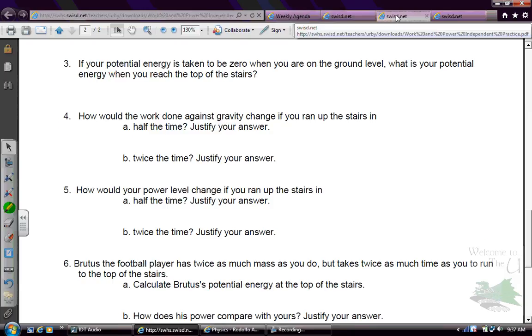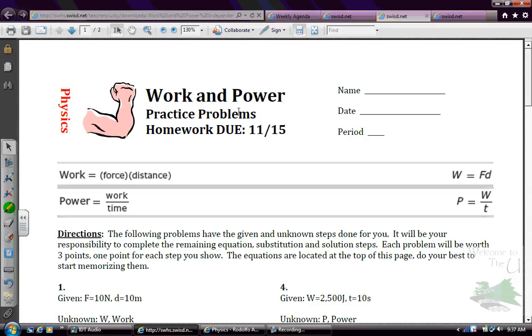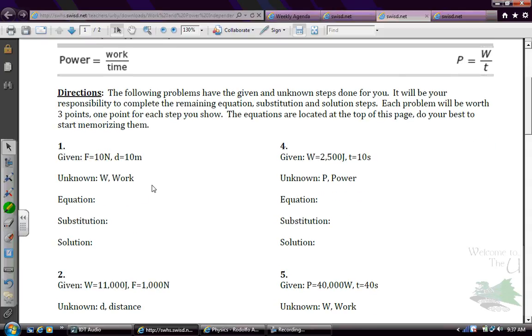So once we're done with this, if you're able to finish in class, you have a homework assignment. You'll notice that I have the equations for work and power up here, and I've already done a given step, an unknown step, and all you have to do is write down what equation you would use, substitute the numbers in, and then solve it. So you only have to do the ESS step. These aren't word problems. I've already given you what you need to do to solve the problem.